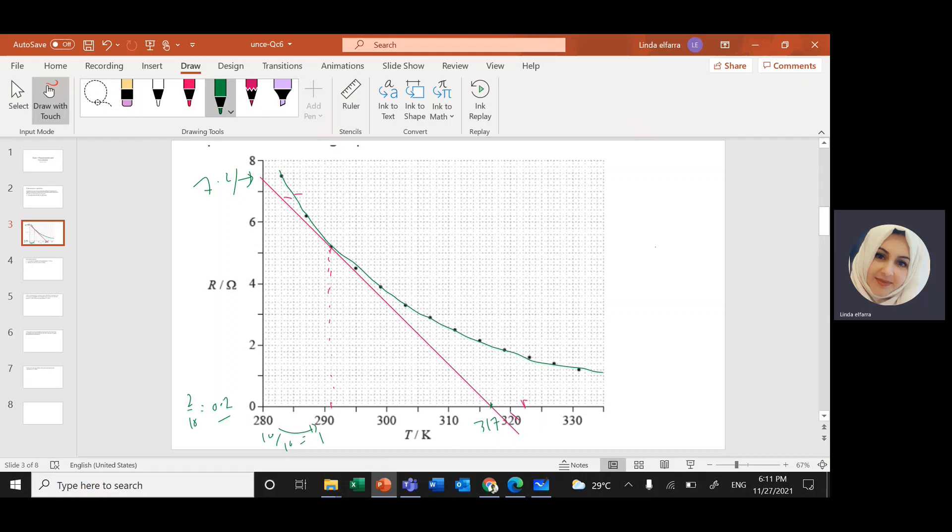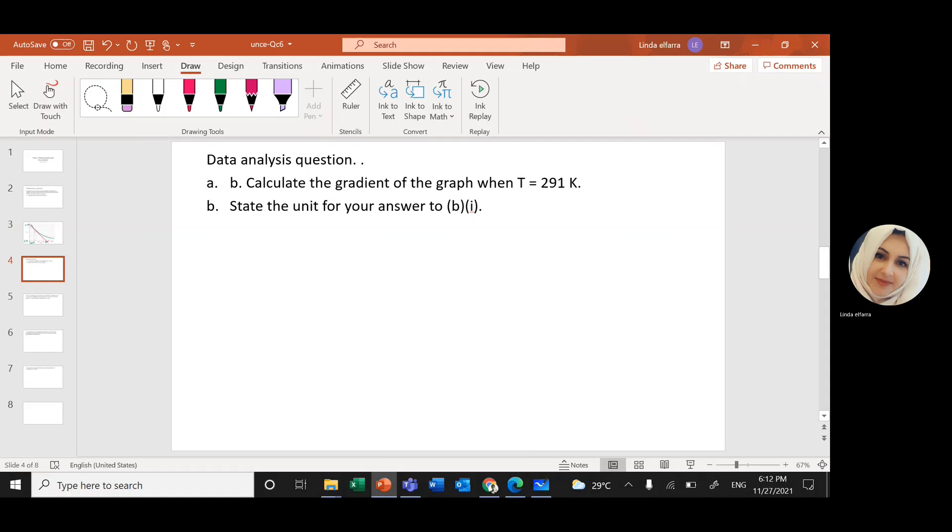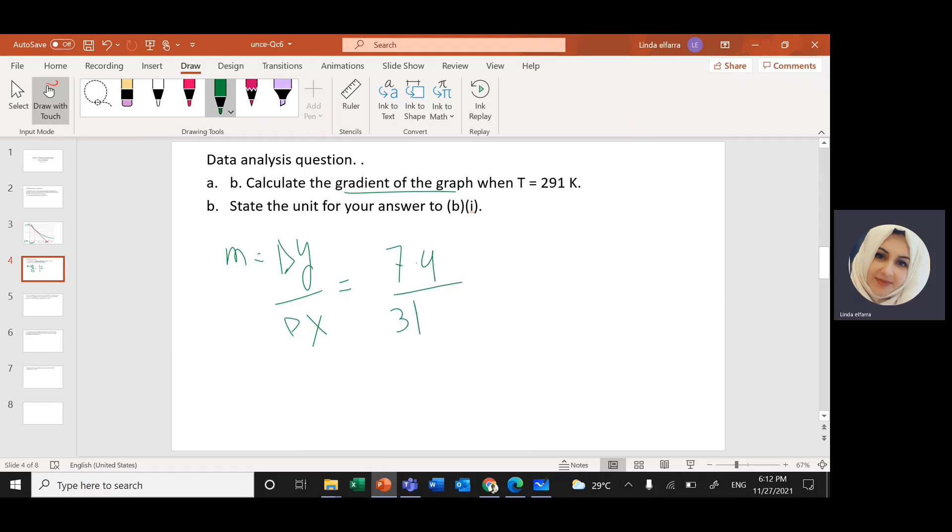So if I want to find the slope change in y divided by change in x, change in y will be 7.4 divided by change in x. Change in x, I have 317 minus 280. So it will give me around 0.2. So the slope or the gradient, the gradient or the slope change in y over change in x, change in y, it will be 7.4 divided by change in x, 317 minus 280.